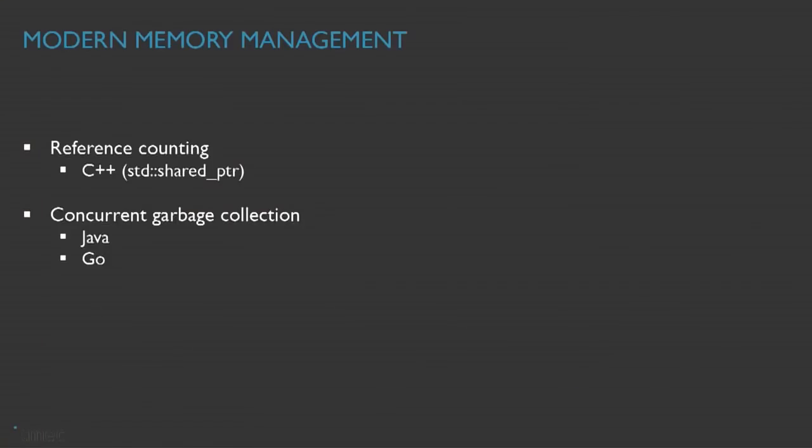When you look at the modern landscape of memory management, there's reference counting and concurrent garbage collection. These are the only mature implementations thereof that we were aware of and that we were able to use. Rust doesn't count and Objective-C doesn't count for various reasons.